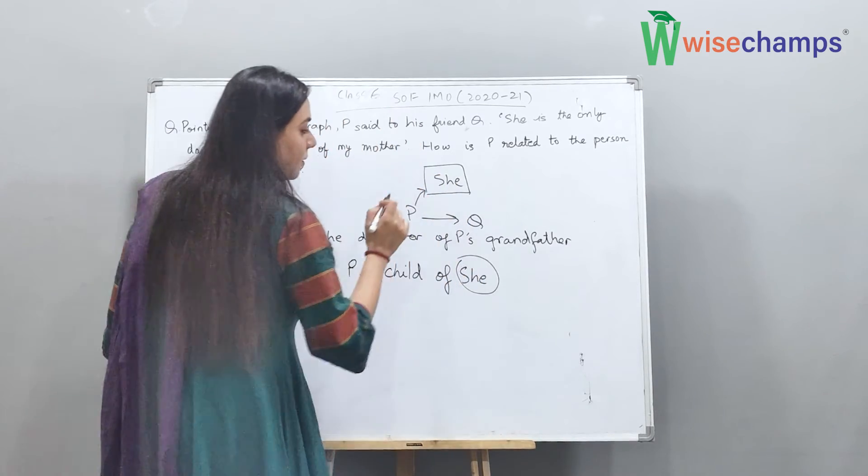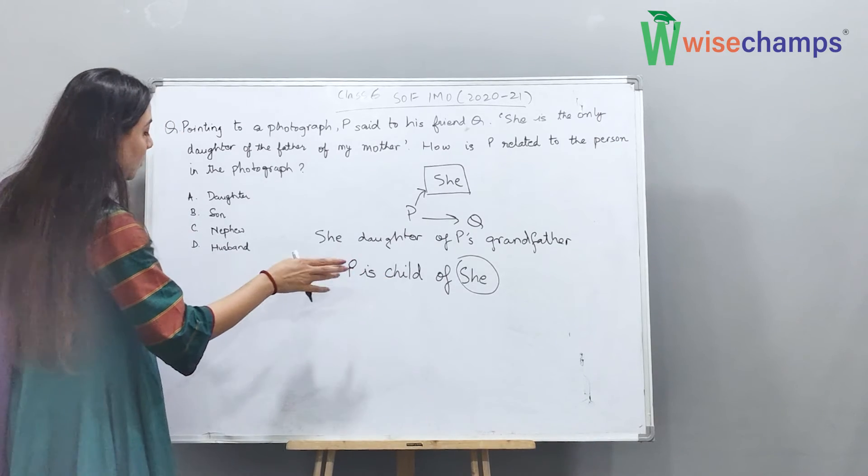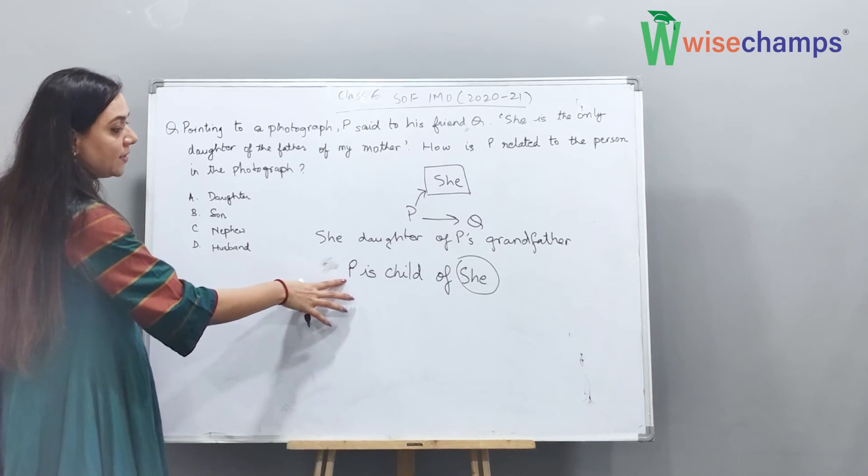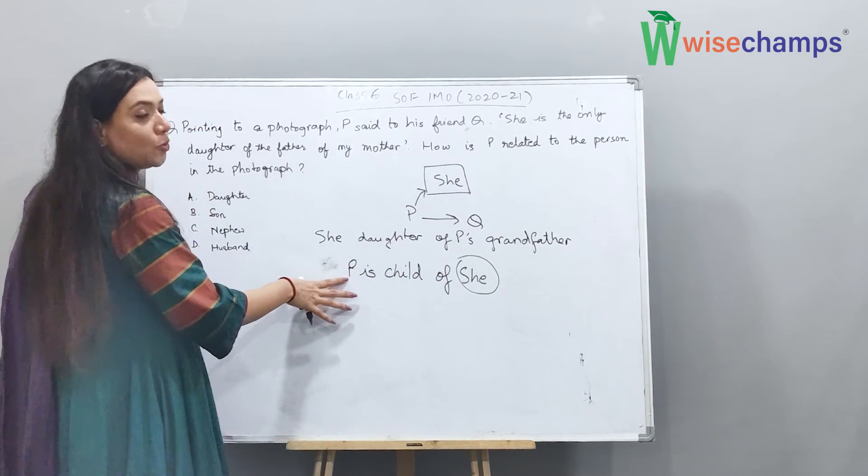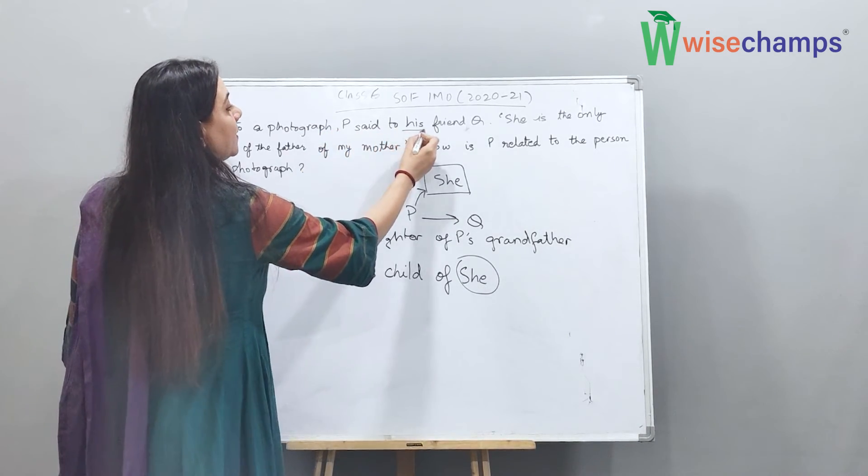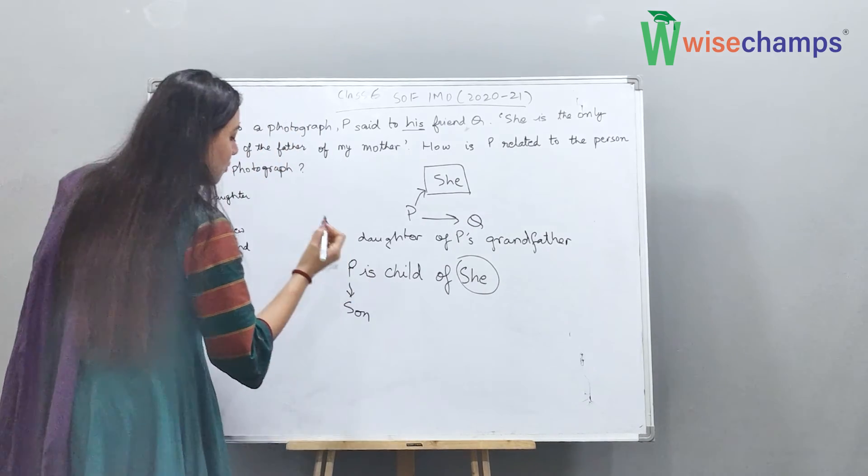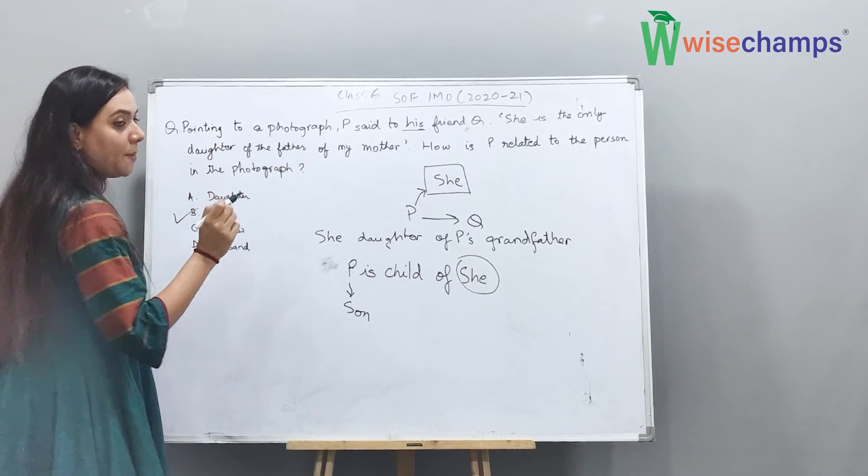The person in the photograph. Now P is the child. So then that means P's relation to she is that it could be either a son or a daughter. But as it says P said to his, his means P is son. So the answer is option number B.